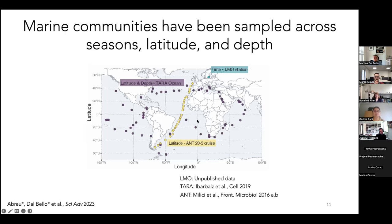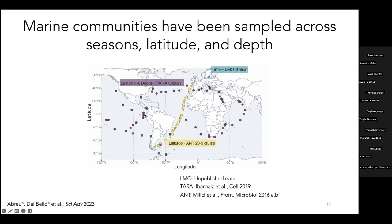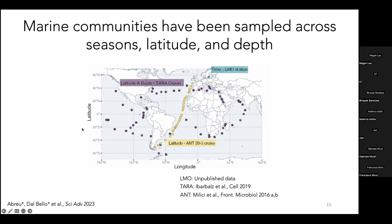The third dataset is the Tara Oceans expedition, which has been sampling marine communities at stations around the globe over several years. What was particularly attractive to us is that they sampled different depths — the sampling dots reflect multiple measurements along the water column from the surface to 1000 meters depth. So we had data across seasons, latitude, and depth, but the challenge was characterizing the distribution of fast and slow growers without measuring growth rates directly in the lab.